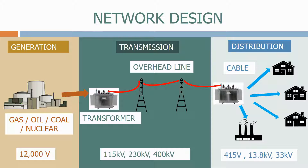Finally we have the distribution system. Distribution systems take the electricity to the factories and homes where the electricity can be used. To allow us to use the electricity safely we step down the voltage using a transformer. To move the electricity around the distribution system we use power cables. Distribution systems tend to be rated at 415 volts, 32.8 kV or 33 kV.